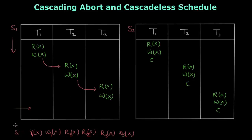Now let us assume that at this point transaction T1 aborts — that is, this transaction fails. When T1 aborts, transaction T2 has read the data item which was not committed, so T2 also aborts. And since T3 has read the data item which was not committed by T2, transaction T3 also aborts.